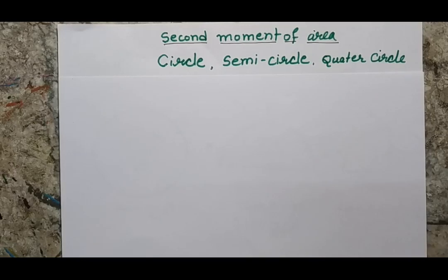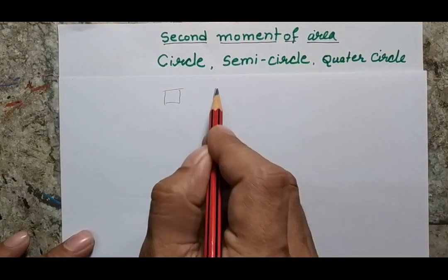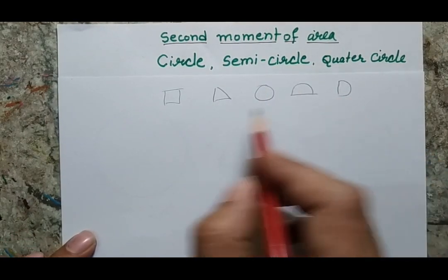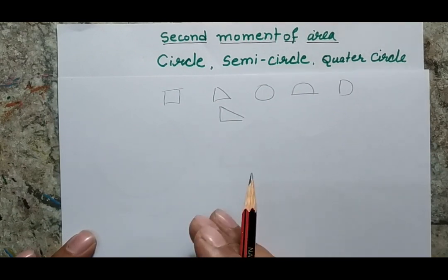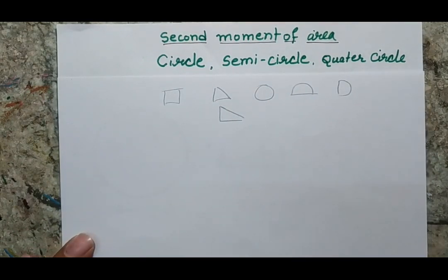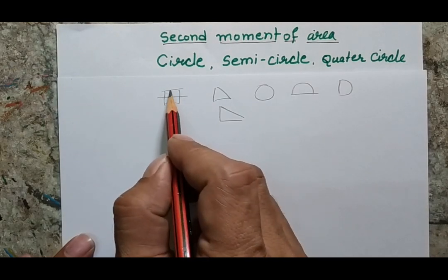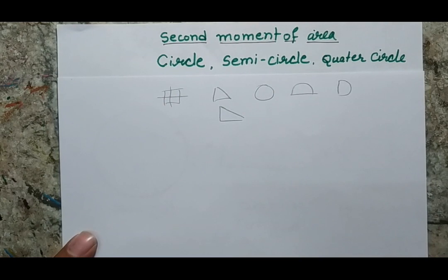In the study of second moment of area of different shapes, we always consider some standard shapes like square, triangle, circle, semicircle, quadricircle, and different right angle triangles. All these are the standard shapes and for all these shapes we know the moment of area about their own central axis.